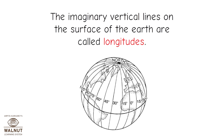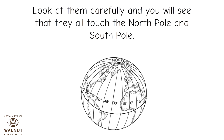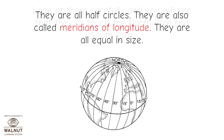The imaginary vertical lines on the surface of the earth are called longitudes. Look at them carefully and you will see that they all touch the North Pole and South Pole. They are all half circles. They are also called meridians of longitude. They are all equal in size.